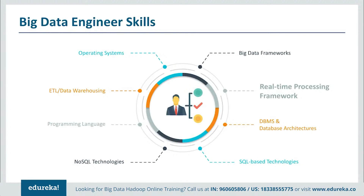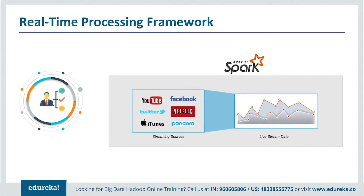Next up, we have real-time processing frameworks. Real-time processing with quick actions is the need of the hour — whether it's a credit card fraud detection system or a recommendation system. Imagine if you wanted a red dress today and Amazon suggested it to you a month later — that would be completely useless. This is where real-time processing is essential. Apache Spark is one of the most widely used distributed real-time processing frameworks in the industry, and it can be easily integrated with Hadoop, leveraging HDFS.